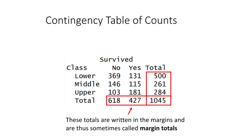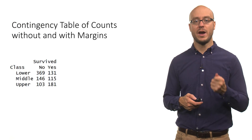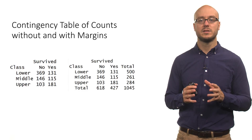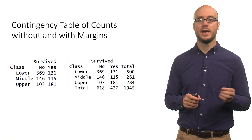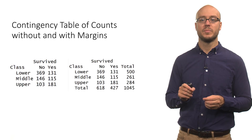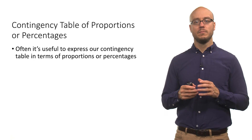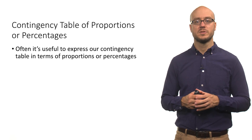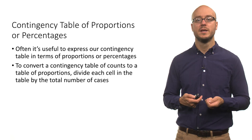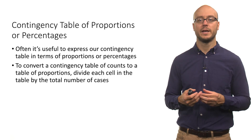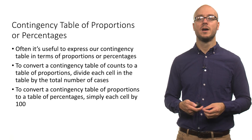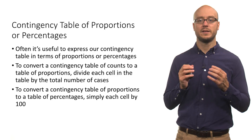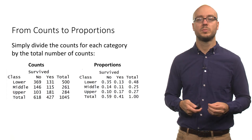The totals in the margins are called marginal totals because they are written in the margins. To create a table with margins from one without, you just add up the counts for each row and each column, and the lower right-hand corner is the sum of those margin totals. You might also encounter a contingency table of proportions or percentages. To convert a table of counts to proportions, you divide each cell by the total number of observations. To then create a table of percentages, you multiply each proportion by 100.